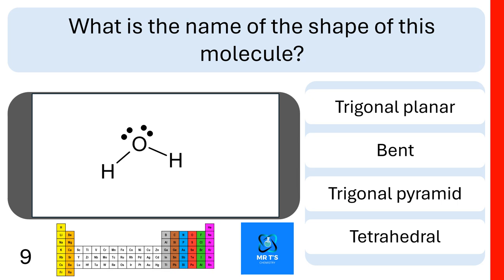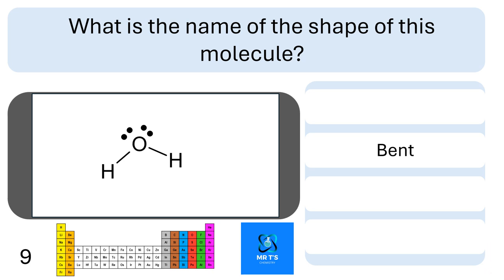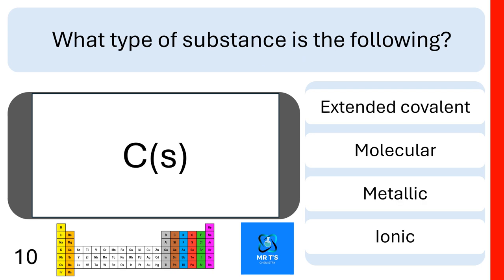Question nine: what is the name of the shape of the water molecule? Is it trigonal planar, bent, trigonal pyramidal, or tetrahedral? If you put bent, you're correct.